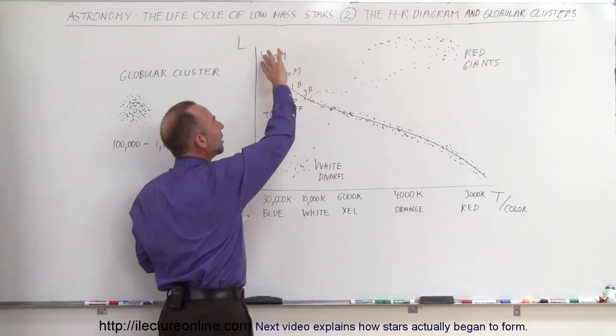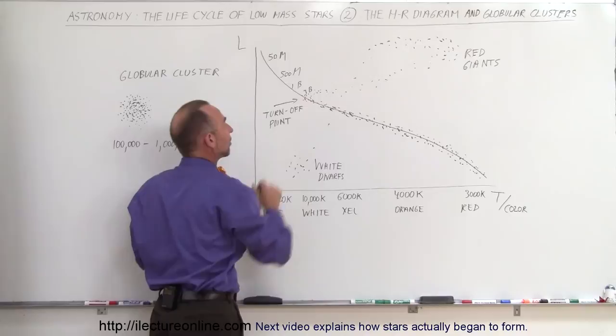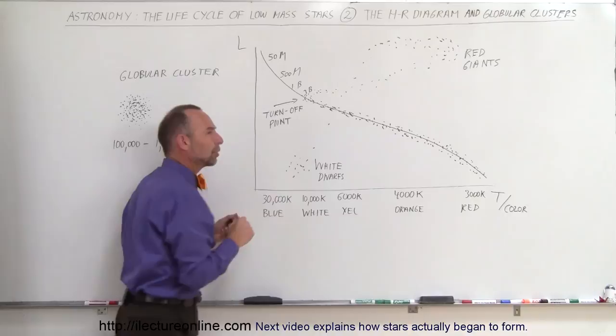Any stars that are smaller than that critical mass needed to go to a red giant stage at this point in time would still need a few more billion years before they would turn into red giants. So this turn-off point was actually an indicator of how old the stars are in one of those clusters.